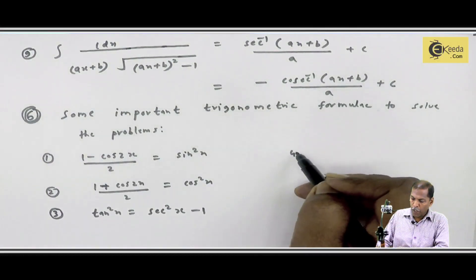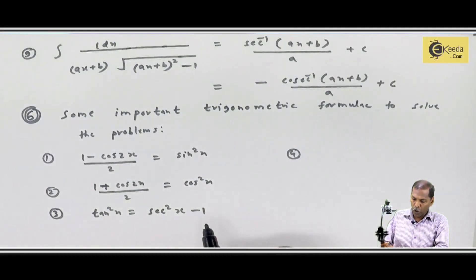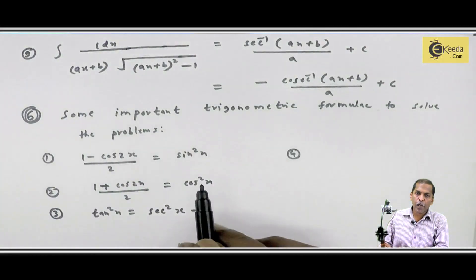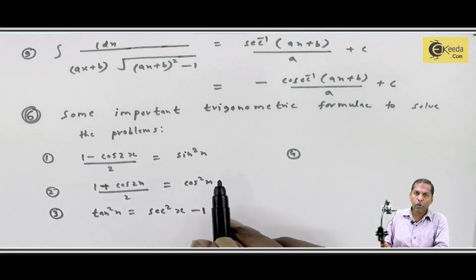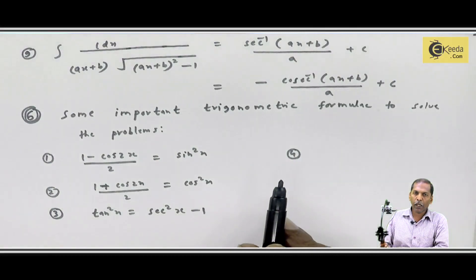And the fourth formula is cot²x, connected to the trigonometric identity. The main formula: 1 plus cot²x equals cosec²x.